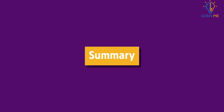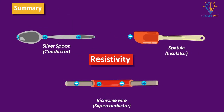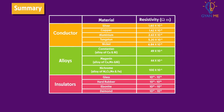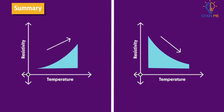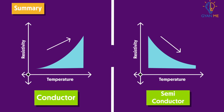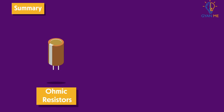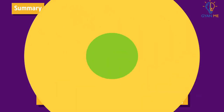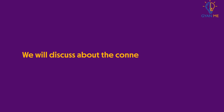So students, in this video we learnt about the property of material called resistivity. Resistivity is the measure of the ability of a material to oppose the flow of current. We also studied the resistivity of various conductors, alloys, and insulators, and the effect of temperature on the resistivity of conductors and semiconductors. The resistors which obey Ohm's law are called ohmic resistors, while those which do not are called non-ohmic resistors. In our next video, we will discuss the connection of resistors.